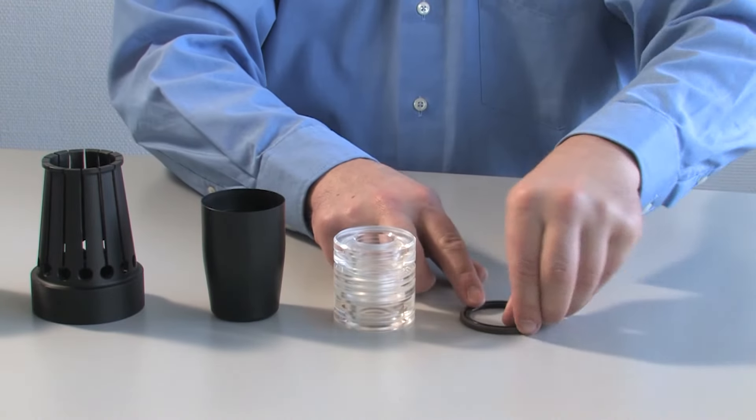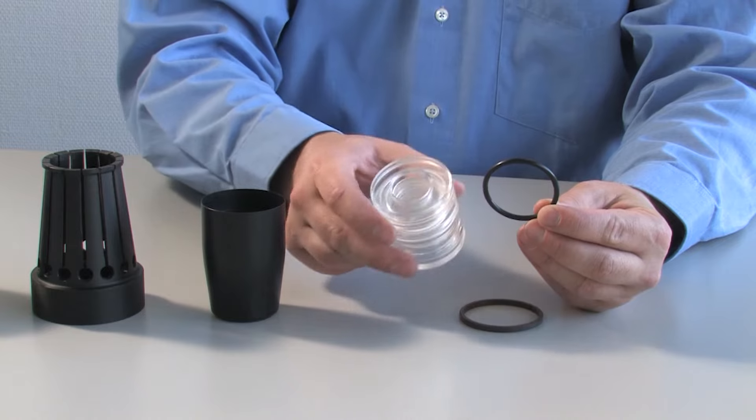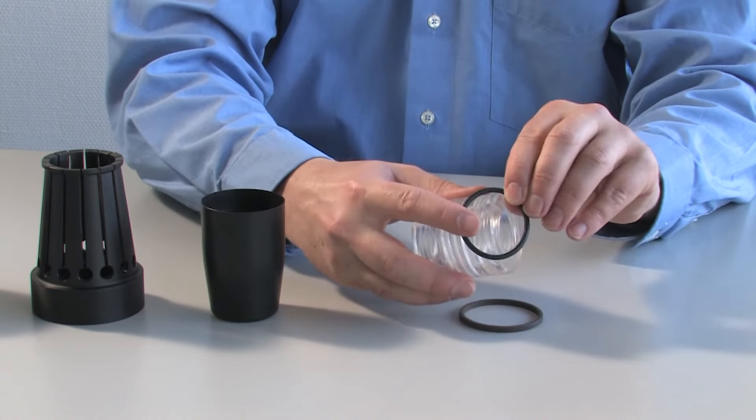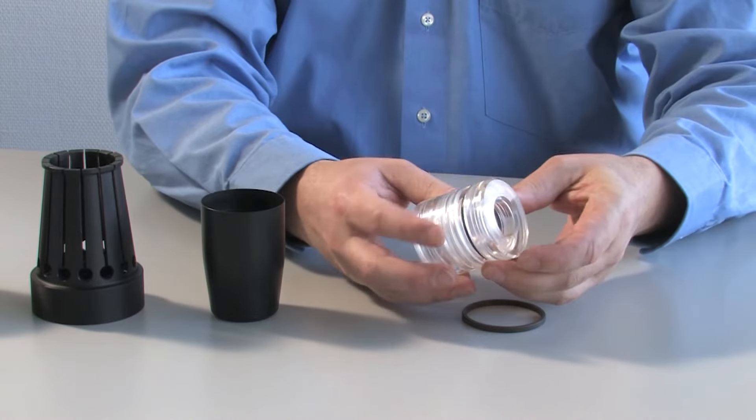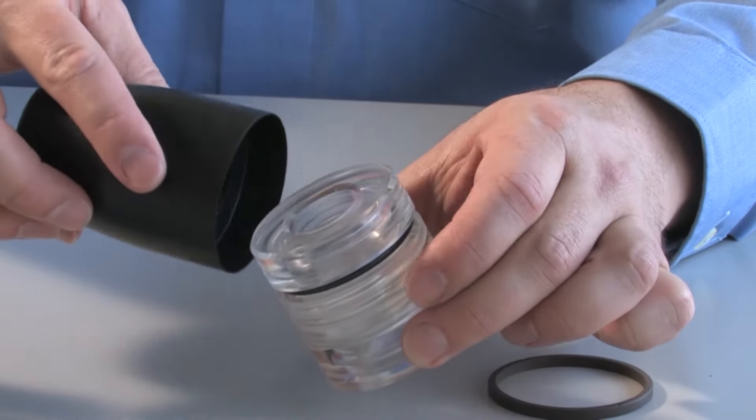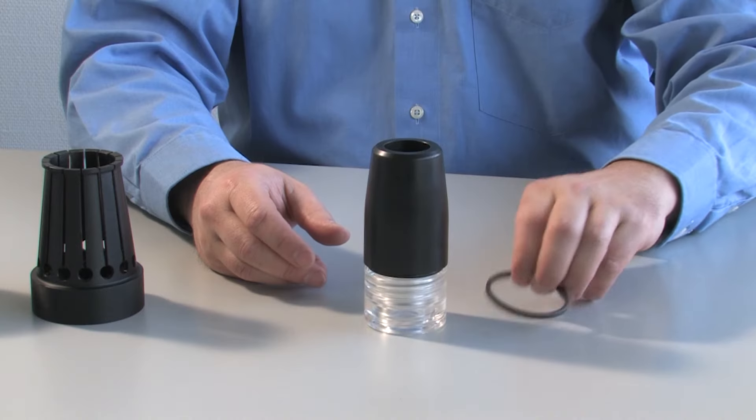When installing seals which consist of two separate parts, such as those of the Merkle Omegat series, first dilate the elastomeric preload element and place it into the designated mounting groove. Do not roll O-rings to their final position in the groove as this may cause them to fail during operation.